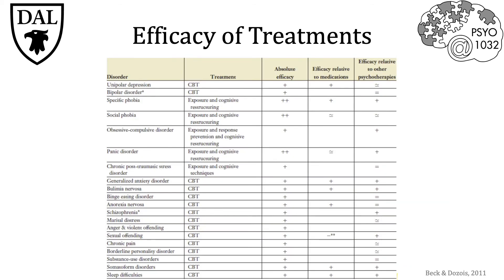So how well do these treatments actually work? In this table, originally created by Epp and Dobson in 2010 and later reproduced by Beck and DeZoy in 2011, we see outlined the efficacy of CBT and exposure therapies in treating a number of different psychological disorders. Two pluses means it is the number one best treatment for that disorder, and one plus means there's evidence that this treatment has positive effects. For specific phobias and panic disorders, exposure therapy is the best possible approach.